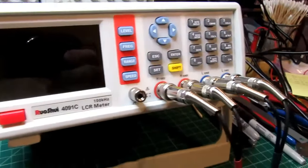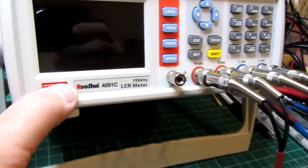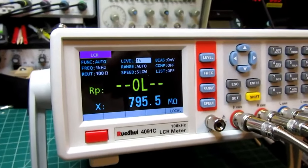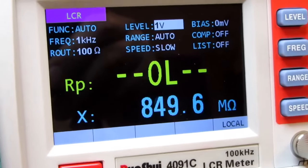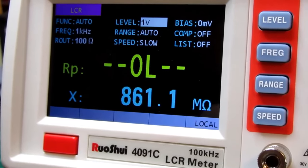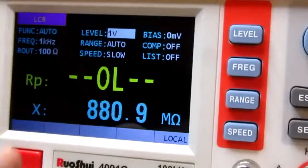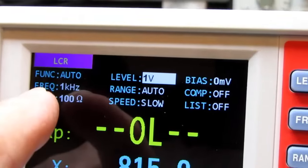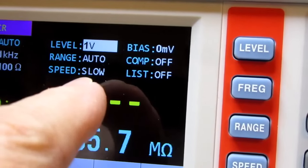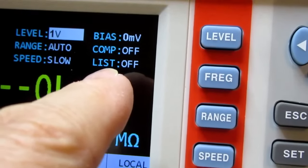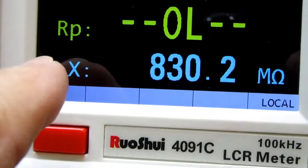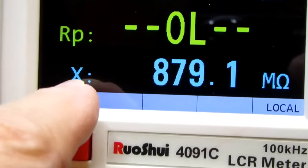I have all the test lead connectors plugged in. Push the power button. Looks like a pretty clear display. I'll view it from this angle, less glare. So this is a bunch of settings here. The function is in auto. Frequency is set to 1 kHz. R out is 100 ohms. Level is 1 volt. Range is auto. Speed is slow. Bias is 0 millivolts. Compensation off. List off. This will be your primary parameter. Currently it's set up for resistance parallel and impedance.